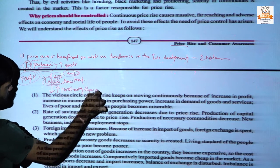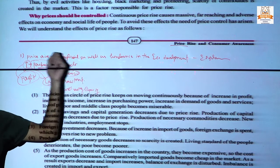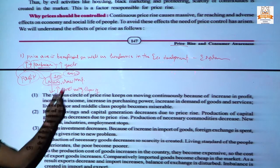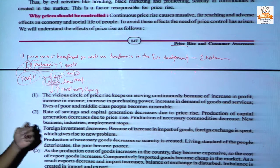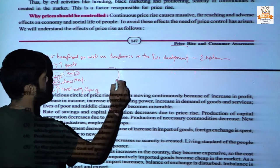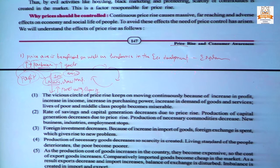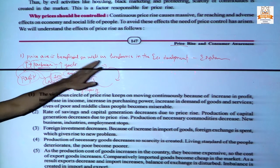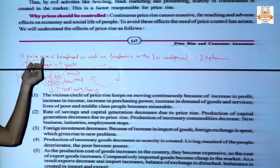Purchasing capacity will increase. Similarly, the value of raw material will also increase. Because of this, what happens in the economy is that development keeps going — the development cycle continuously increases. That is the benefit. Now how does Price Rise become a hindrance? Price Rise means a sudden increase in the price of any particular commodity.